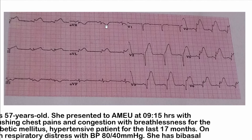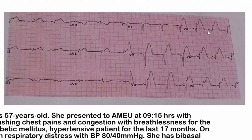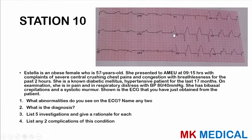The waves in AVR are usually inverted — this appears normal. However, there are low voltage waves across the limb leads. There is ST segment elevation present. The T waves can be made out in some leads, but in others P waves may not be clearly visible. There appears to be some flattening of T waves on this ECG. Those are some of the abnormalities visible on the ECG — take time to go through it yourself.